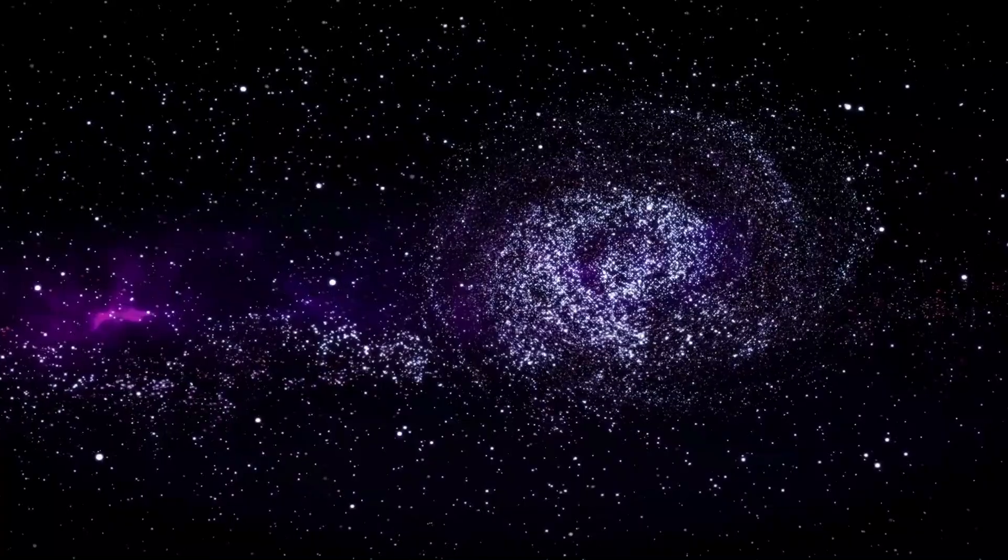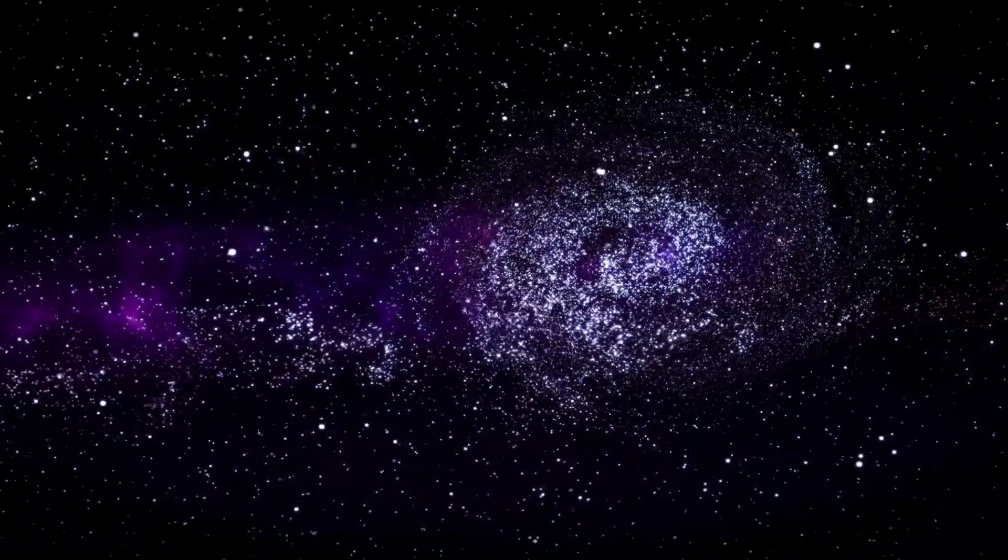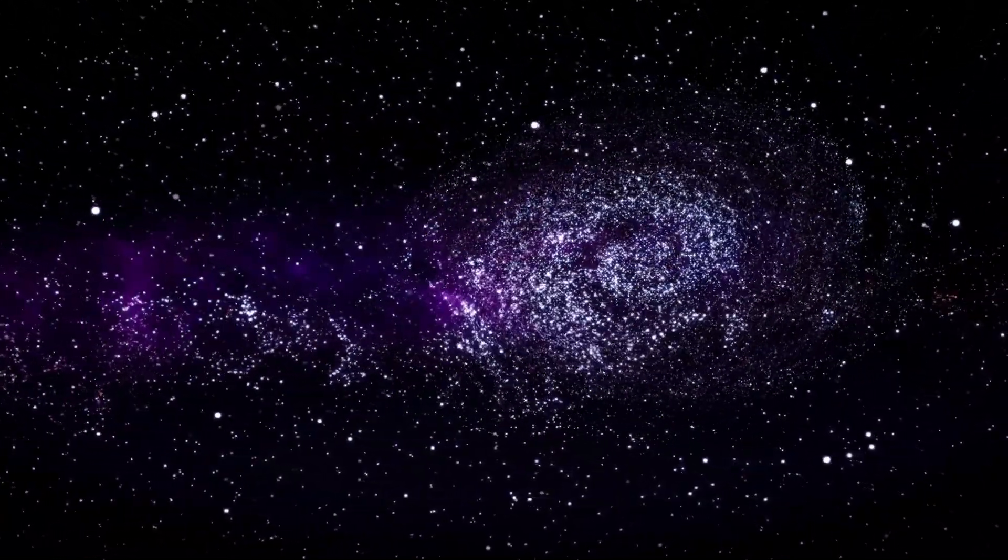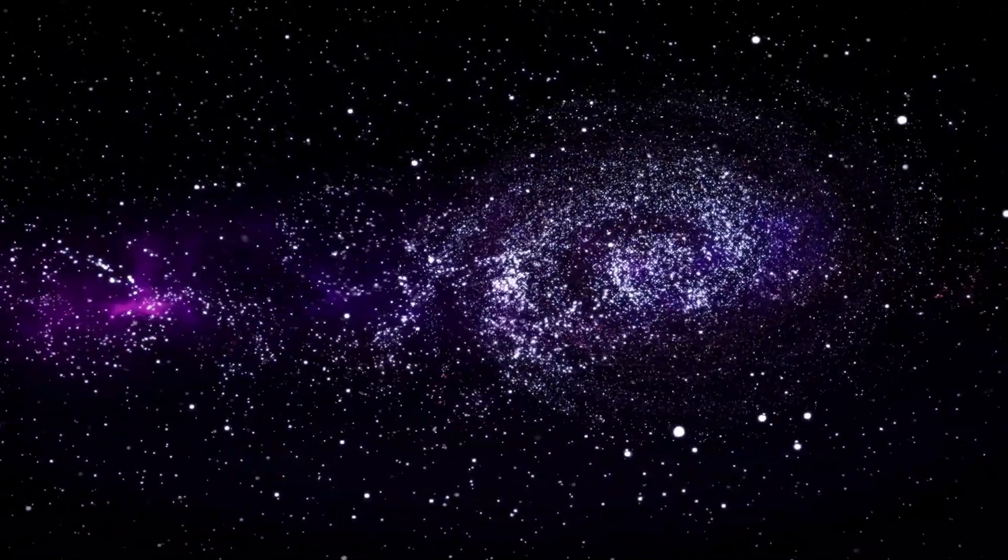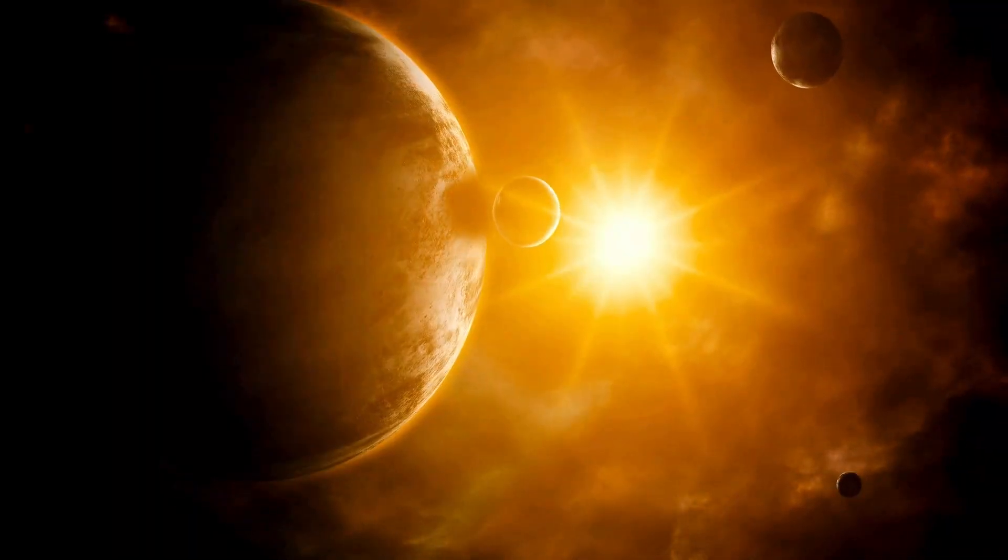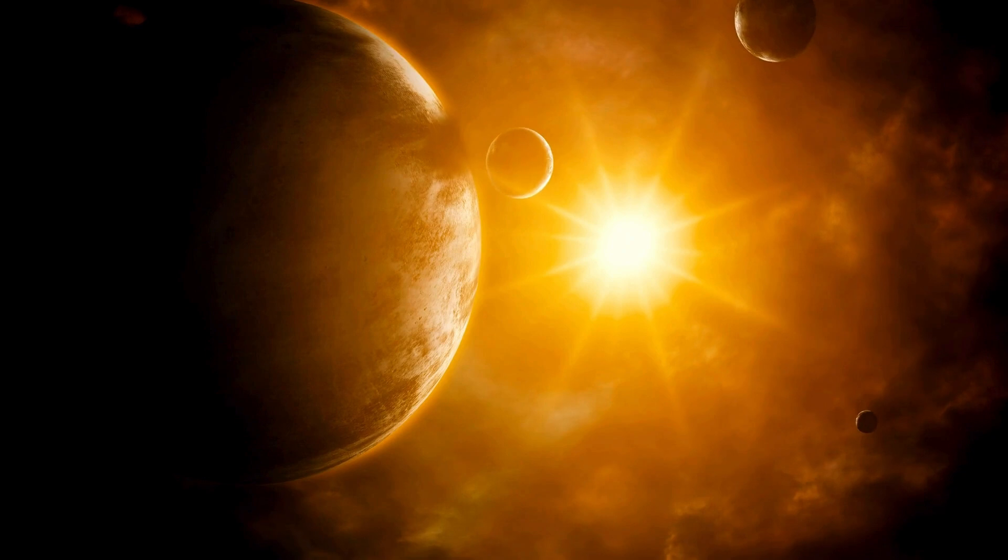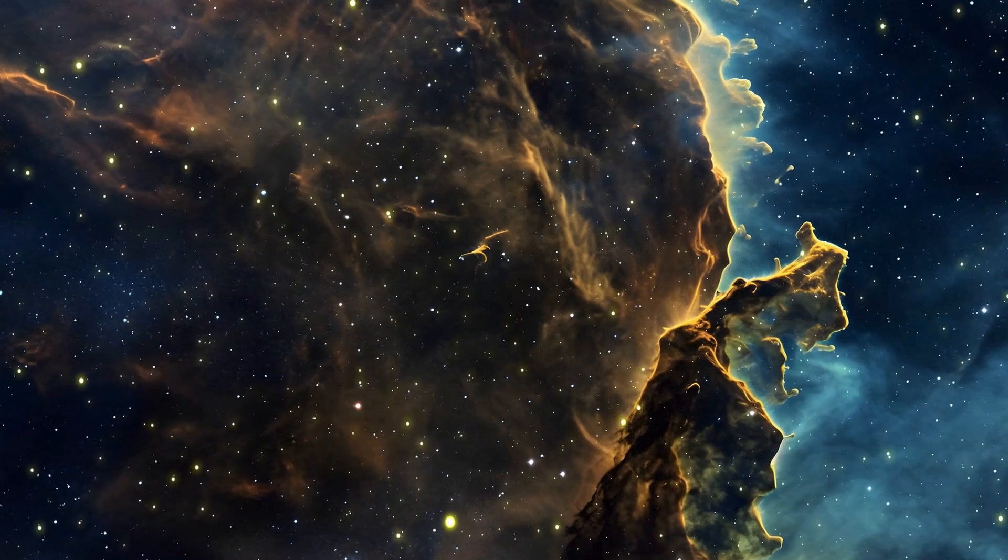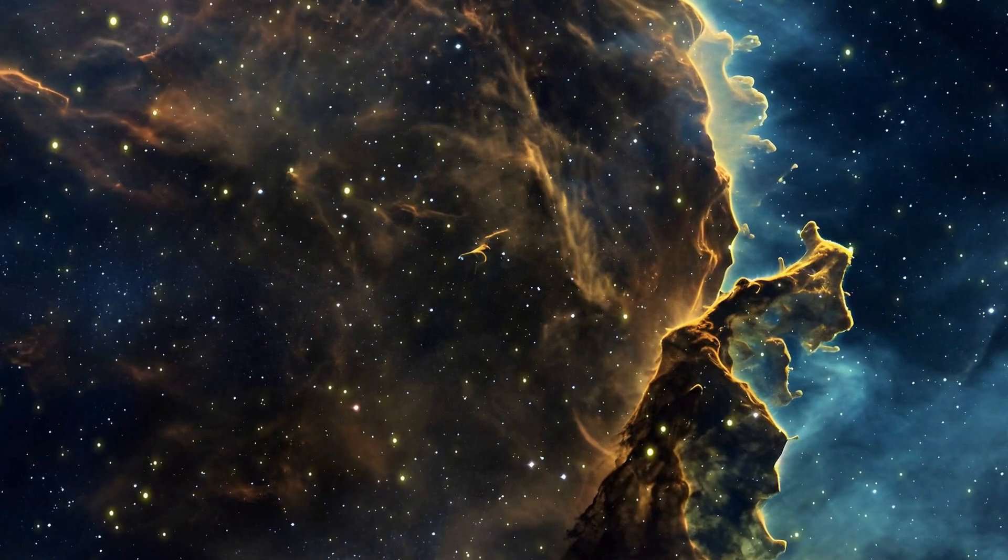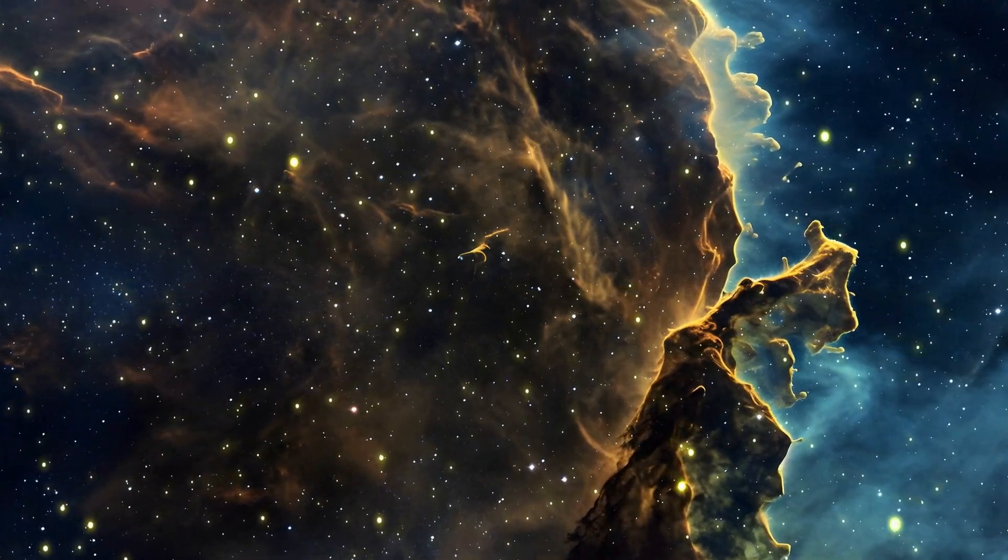As we move away from our galaxy, we encounter our local group of galaxies, followed by the Virgo cluster, which contains more than 1,500 galaxies. The Virgo cluster is part of a larger supercluster known as Laniakea, which contains approximately 100,000 galaxies. Each of these 100,000 galaxies has hundreds of billions of stars and planets of its own, and this is only a small part of the big picture.